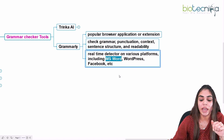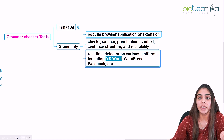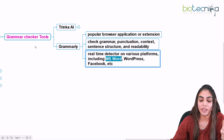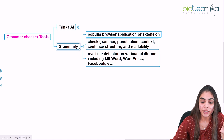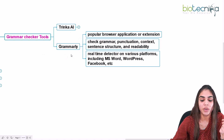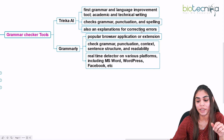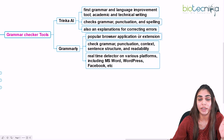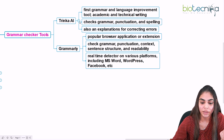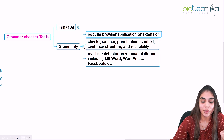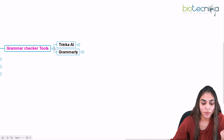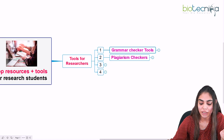You can copy and paste everything into Grammarly to check for any mistakes. So this is all about the grammar checking tool. You can use either of these tools. The advantage of Trinka AI is that it provides an explanation for correcting errors. That is all about grammar checking tools. Coming to the next kind of tool — plagiarism checker.